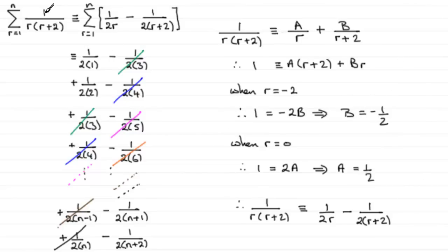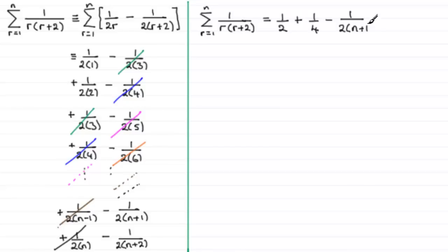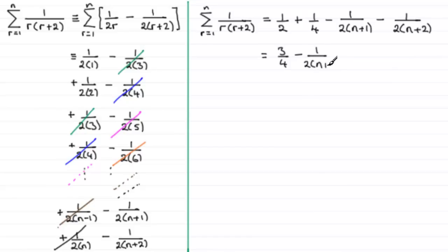So what we've got, after expressing in partial fractions and cancelling, is that the summation equals the first surviving term 1 over 2(1) which is one half, plus 1 over 2(2) which is one quarter, minus 1 over 2(N+1), minus 1 over 2(N+2). Simplifying: three quarters minus 1 over 2(N+1) minus 1 over 2(N+2). That is our formula for the sum of the first N terms.